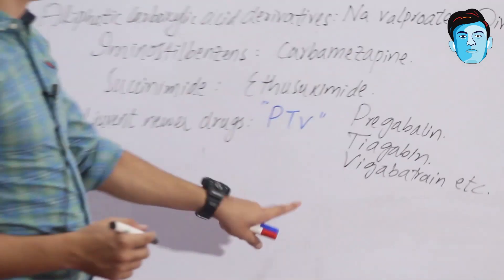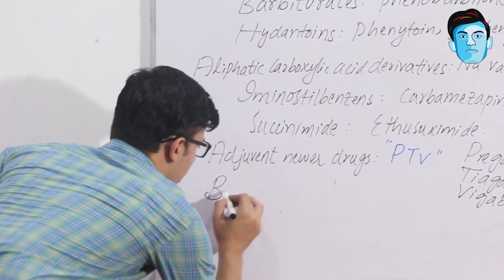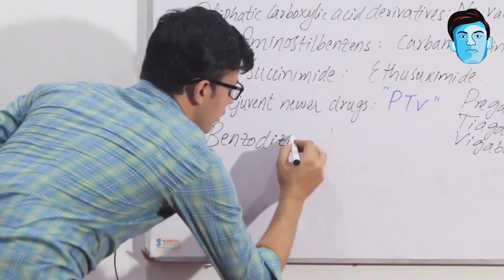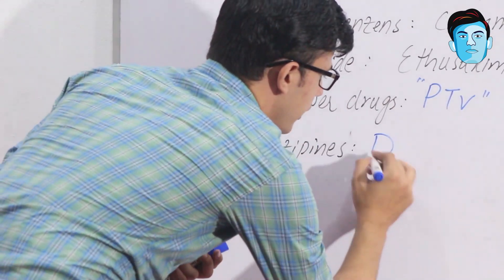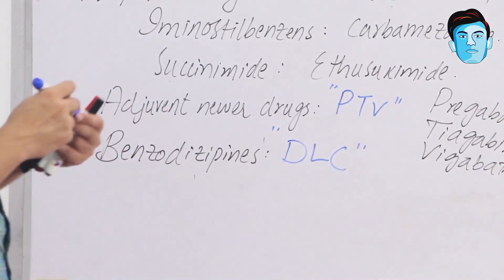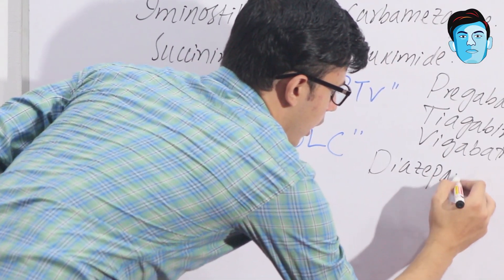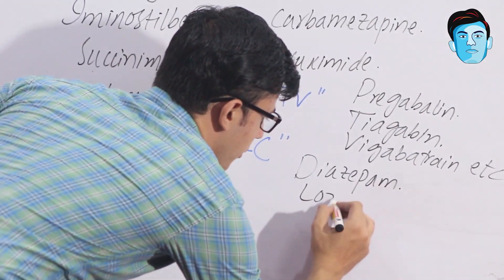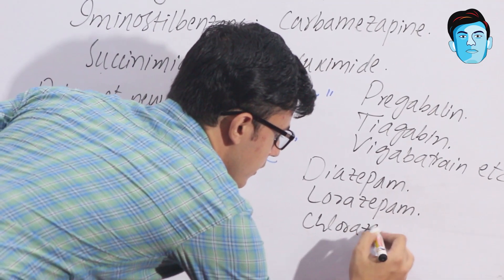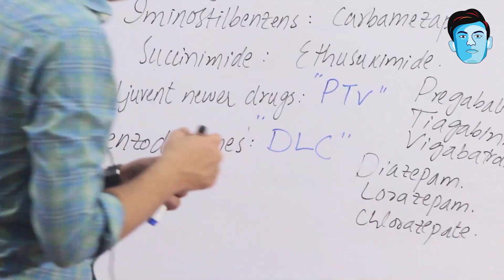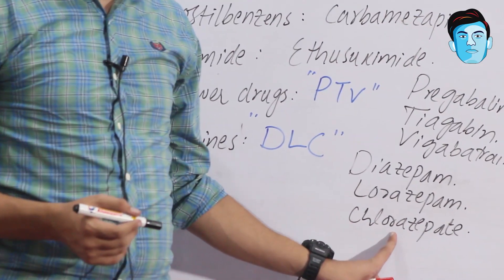At the last we have B, where B stands for benzodiazepines. For benzodiazepines we have a trick that is DLC. D stands for diazepam, L stands for lorazepam, and C stands for clorazepate.